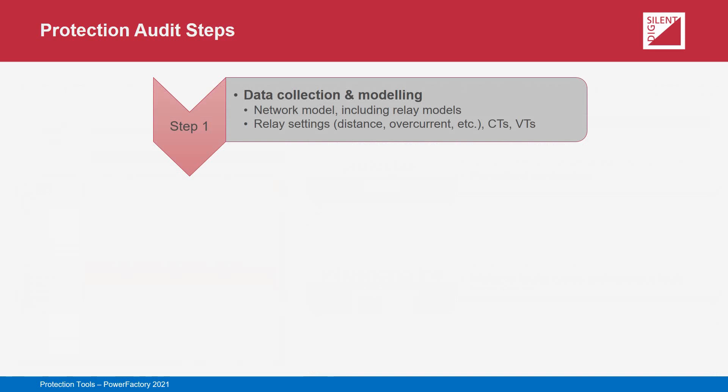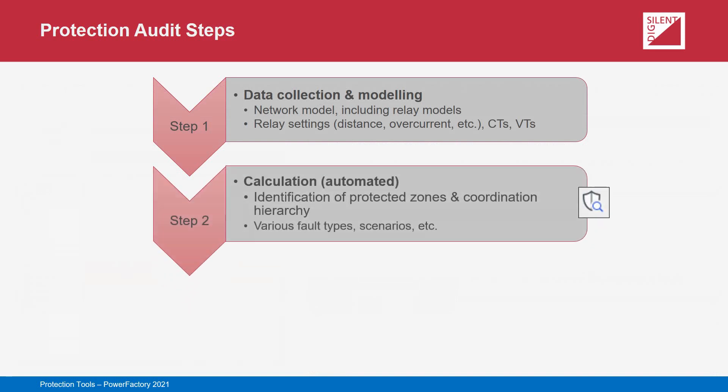At a high level, the protection audit process can be considered to consist of three main steps. The first step is to populate the PowerFactory model with the relays and settings which are going to be analysed. This will likely involve significant data gathering, where it is vital that the locations and models of relays, CTs and VTs are captured, and that their settings and ratios are identified. There may be scope to use the capabilities of DIgSILENT's protection setting database StationWare to help facilitate this. The second step is to carry out the automated calculations, during which the tool builds up a picture of the relationships between relay models and network elements being protected, as well as the coordination hierarchies between relay models.